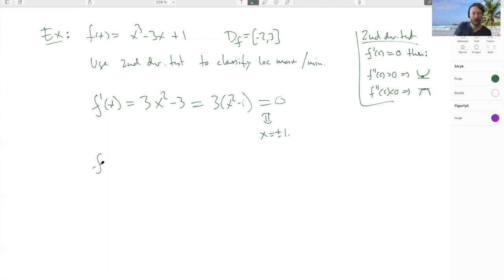So we can now do the double derivative at x first, which now is 6x. And then we can see that the double derivative at 1 is 6, so it's positive. And the double derivative at -1 is equal to -6, which is negative.